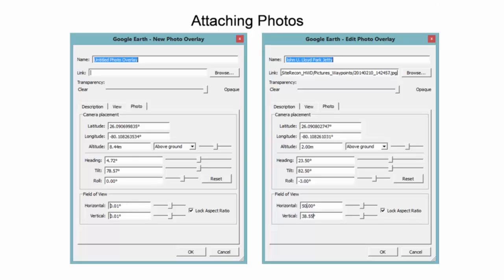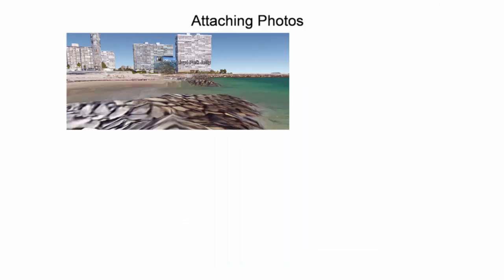The image on the right shows the difference in the location and orientation parameters between the original approximation and the best approximation, as it relates to lining the image up with the horizon and the direction of the camera exposure. As one navigates to the camera exposure position, a thumbnail of the image appears.